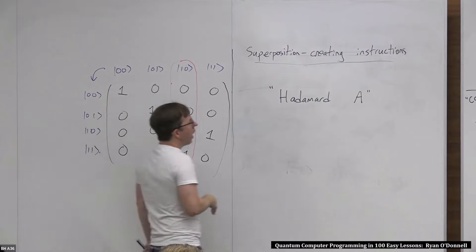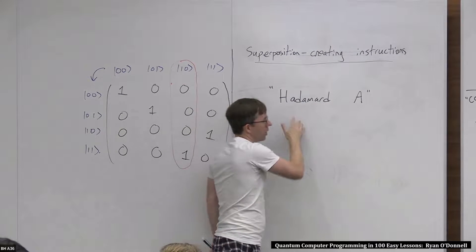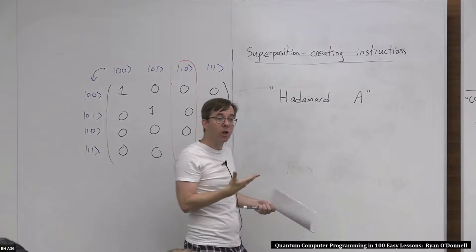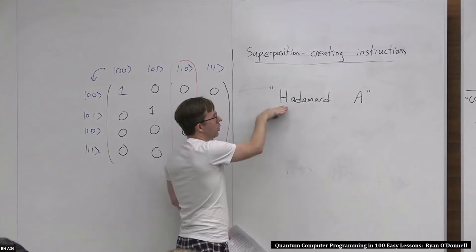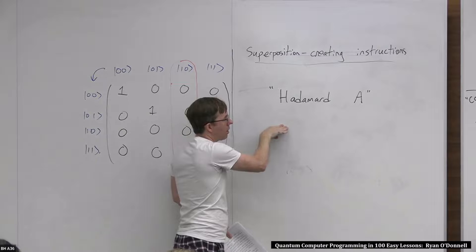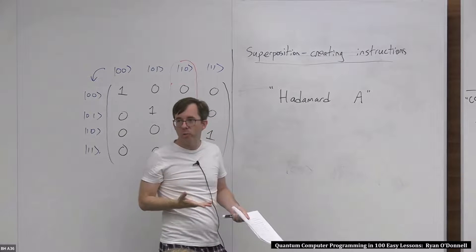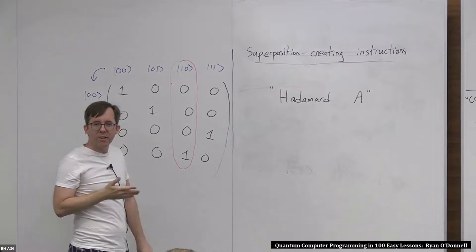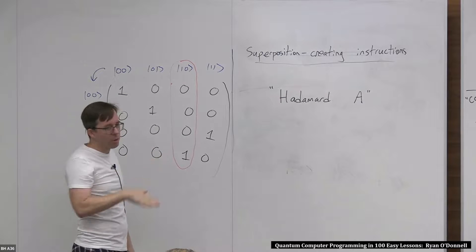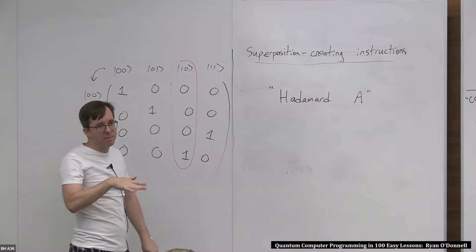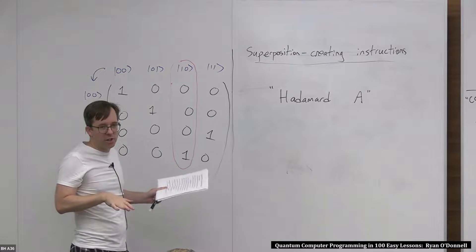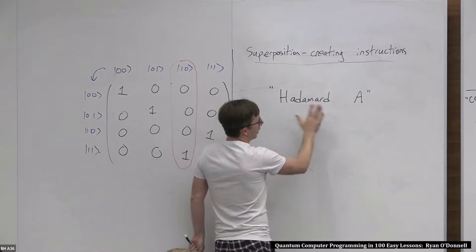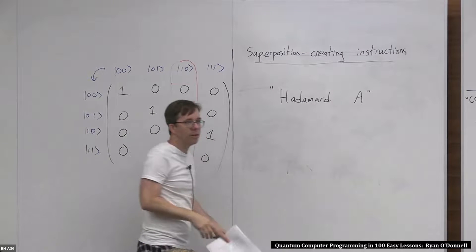We kind of saw this in lecture one. We had an instruction called Hadamard-all, which was just pseudocode shorthand for doing the one-qubit Hadamard instruction on all the qubits. It turns out that if you're going to do Hadamard on all the qubits, it doesn't matter in which order you do them, so it's fine to just call it Hadamard-all. But really, Hadamard is just a one-qubit instruction.